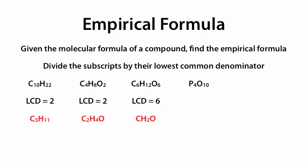With P₄O₁₀, we look at 4 and 10 and find the lowest common denominator to be 2. We divide 4 by 2 and 10 by 2 to get P₂O₅. Finally, N₂O₅: we look at 2 and 5 and find the lowest common denominator to be 1, giving an empirical formula of N₂O₅ — here, the molecular formula is the same as the empirical formula.